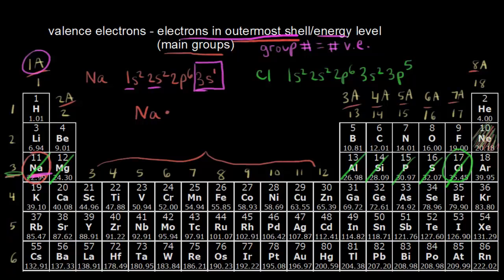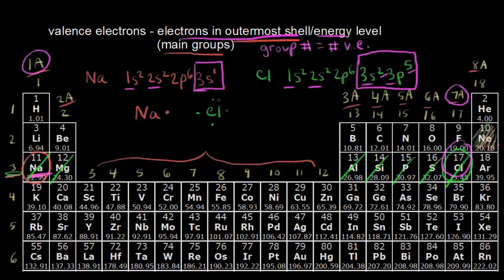If I want to figure out how many valence electrons chlorine has, I have to look for the electrons in the outermost shell, or the outermost energy level. I have the first, second, and third energy levels. The total number of electrons in the outermost energy level — the third — is two plus five, for a total of seven. So chlorine has seven valence electrons. That's convenient because chlorine is in group seven. Drawing chlorine with its seven valence electrons looks like this: one, two, three, four, five, six, and seven.